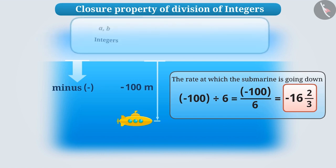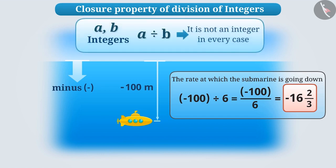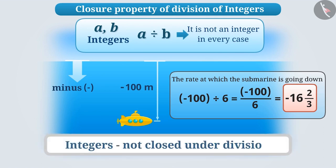Broadly, the result obtained from the division of any two integers is not an integer in every case. Therefore, integers are not closed under division.